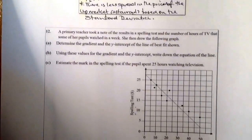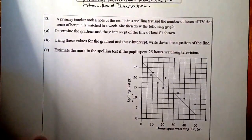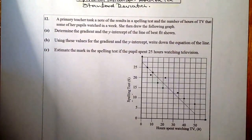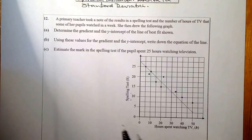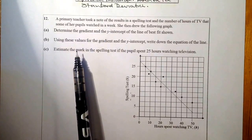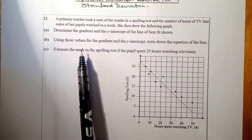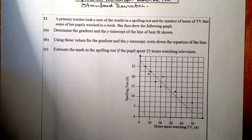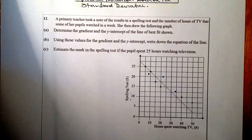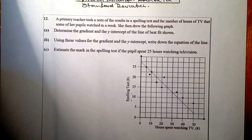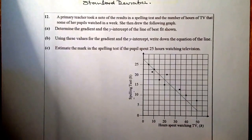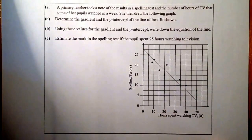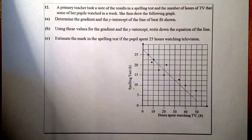Now let's look at Question 12, which is a scatter graph question. A primary teacher recorded results in a spelling test and the number of hours of TV that some pupils were watching, then drew a graph. We need to determine the gradient and the y-intercept of the line of best fit. The line is already drawn in for us.